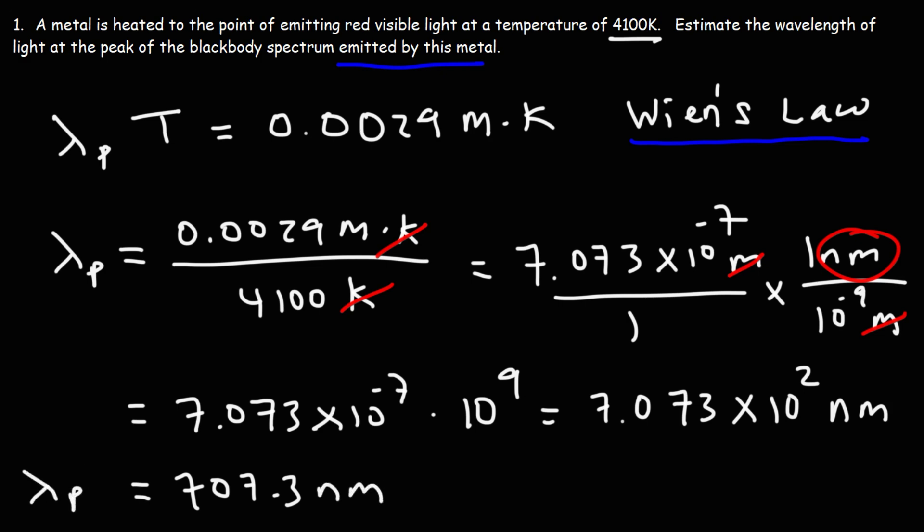That is the wavelength at peak intensity in the blackbody spectrum that's going to be emitted by this hot metal when it's at a temperature of 4100 Kelvin. That's how you can use Wien's law to get the wavelength at peak intensity if you know the Kelvin temperature of the object.